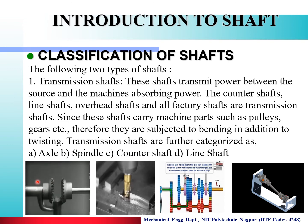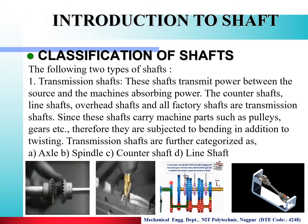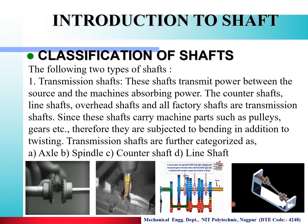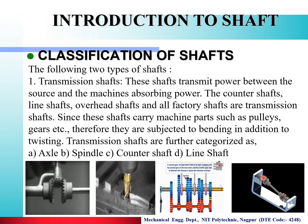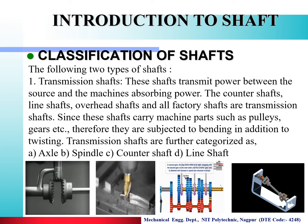Here you can see the axle, and this is the spindle of the drilling machine. Then this is the counter shaft, which you can see in the automobile subject — there is a gearbox, a counter shaft, and a main shaft. Then there is the line shaft. Which will transfer the power from here to the rear wheel — this is the propeller shaft, also called the line shaft. So these are the various types of transmission shaft.